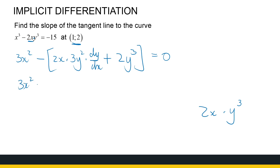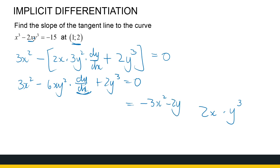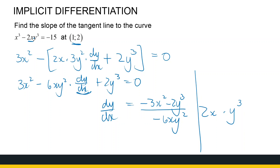Expanding: 3x² − 6xy² · dy/dx + 2y³ = 0. Collecting dy/dx terms and solving, we get dy/dx = (−3x² − 2y³) / (−6xy²). Note: there was a correction — it should be −2y² in the numerator, making it (3x² + 2y³) / (−6xy²) after adjusting signs.